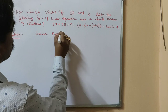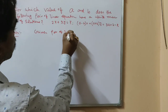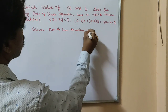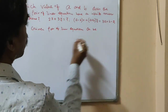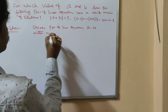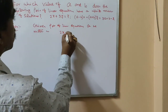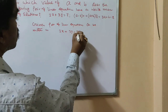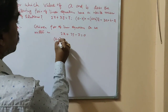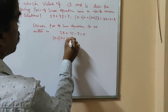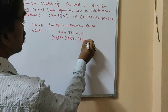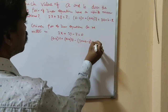The given pair of linear equations can be written as: 2x plus 3y minus 7 is equal to 0, and a minus b into x plus a plus b into y minus 3a plus b minus 2 is equal to 0.